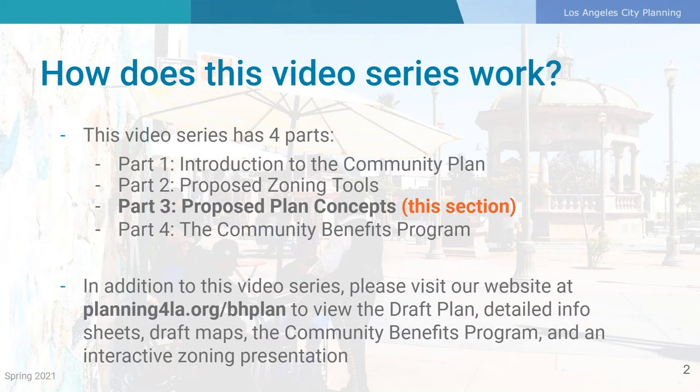Part 1 provides an overview of Community Planning and the Boyle Heights Community Plan. Part 2 provides a look at zoning and the zoning tools that are used in the Boyle Heights Community Plan. And Part 4 is an overview of the Community Benefits Program, an important part of the Community Plan strategy to bolster affordable housing in Boyle Heights. In addition to this video series, please visit our website for detailed informational handouts, an interactive land use and zoning map, and the draft Community Benefits Program.